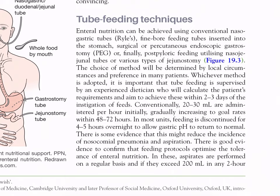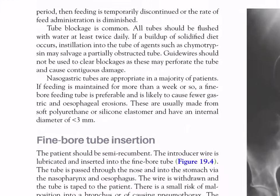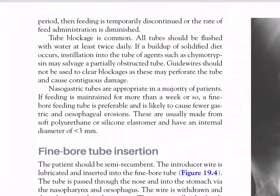Conventionally, 20–30 ml per hour are administered initially, gradually increasing to goal rates within 48–72 hours. In most units, feeding is discontinued for 4–5 hours overnight to allow gastric pH to return to normal; there is some evidence this might reduce the incidence of nosocomial pneumonia and aspiration. Feeding protocols optimize tolerance of enteral nutrition. Gastric aspirates are performed regularly; if they exceed 200 ml in any two-hour period, feeding is temporarily discontinued or the rate is diminished. Tube blockage is common and all tubes should be flushed with water at least twice daily.